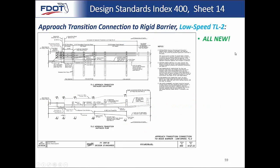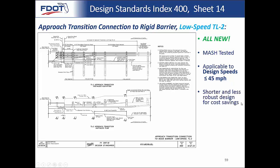Moving on to Sheet 14 — this is something completely new. We now have a TL2 alternative for an approach transition connection to rigid barrier. This one is also MASH tested, applies to design speeds ≤45 mph as do most TL2 items. It's a shorter, less robust system, but the idea is cost savings. If you have a road where design speed will never exceed 45 mph, you can install this system to save space and money. It has the same basic raised alignment curb configuration as TL3, just shorter. The cross sections are on Sheet 15 — whether using TL3 or TL2, all cross sections are identical; only the spacing between them differs for TL2.